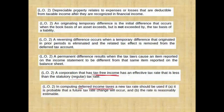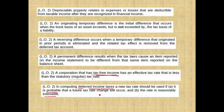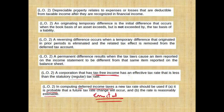In computing deferred income taxes, a new tax rate should be used if it's probable that a future tax rate will occur and the rate is reasonably estimable. When you compute your deferred income taxes for future years, do you estimate what the rate is going to be? No, you don't estimate. You would use the rate that is enacted — it's already passed by law. The rate has to be already approved by Congress. Once it's enacted, that's the rate that you would use. If the rate changes, you have to change your deferred tax asset and deferred tax liability accordingly. This statement is false.